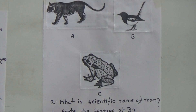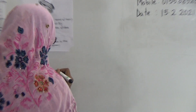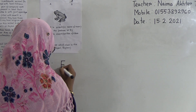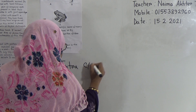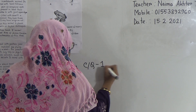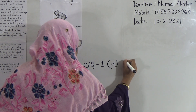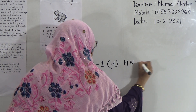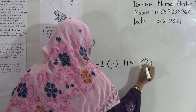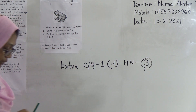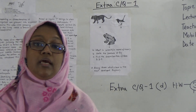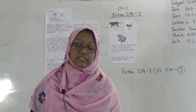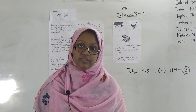Dear students, I am giving the SW: you have to do extra creative question 1, part D, as your SW — this is SW number 3, your third SW. I hope you have understood today's topic. Keep practicing at home, stay at home and stay safe. Thank you very much.